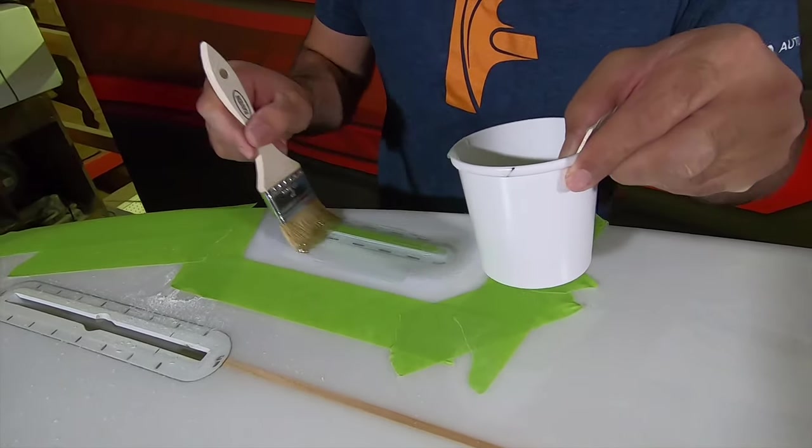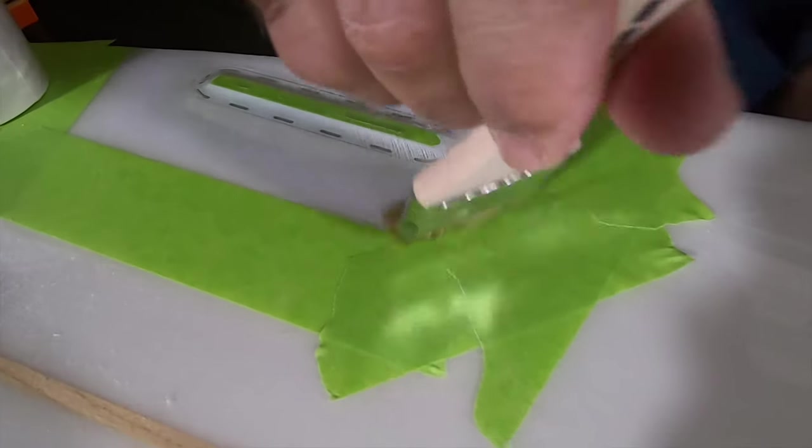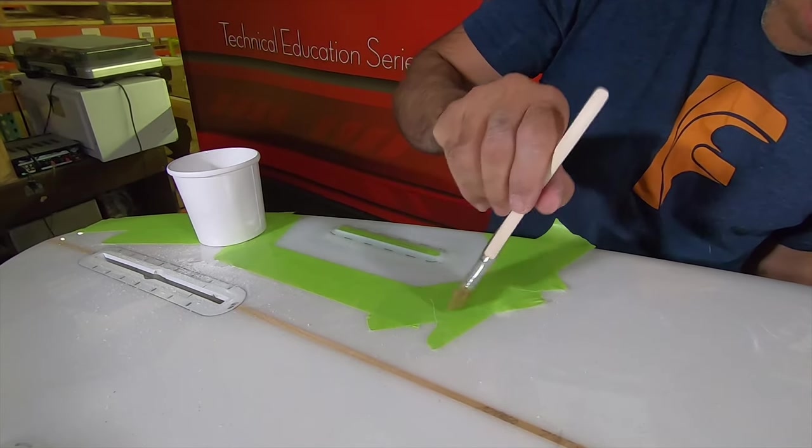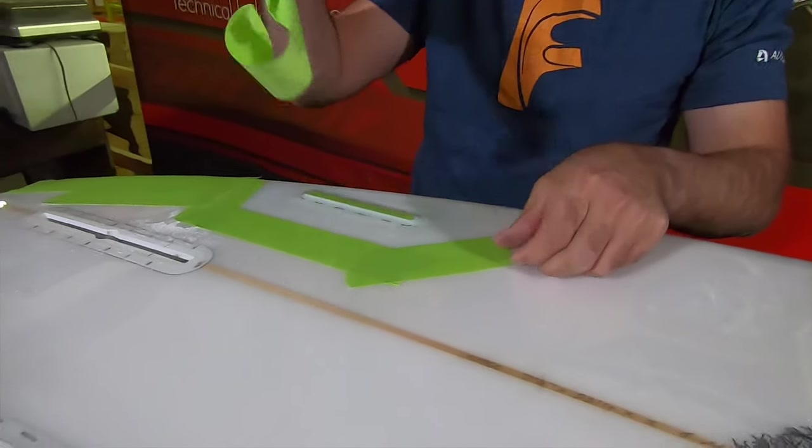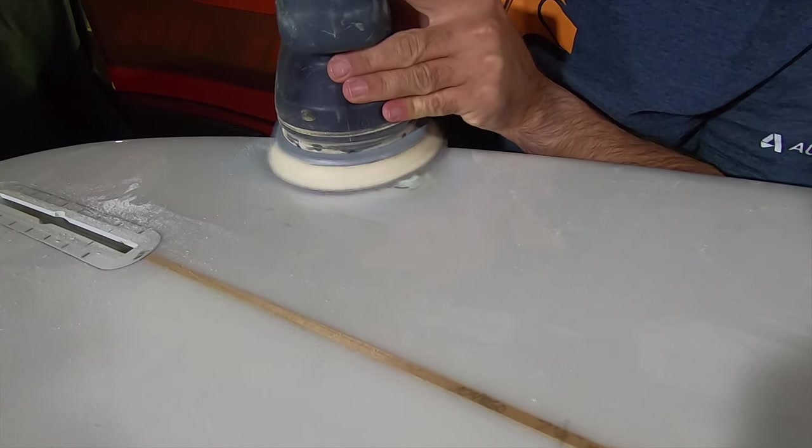That'll make the resin sandable. We're going to paint that over the box nice and smooth. It doesn't take a lot. Once that is on we'll take it out and cure it. We'll pull the tape before we cure it so there's no resin over it.